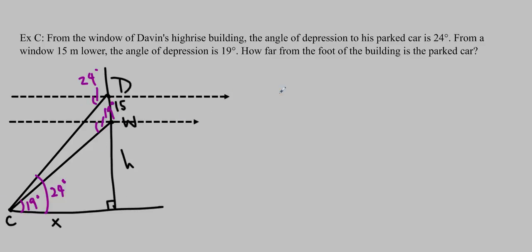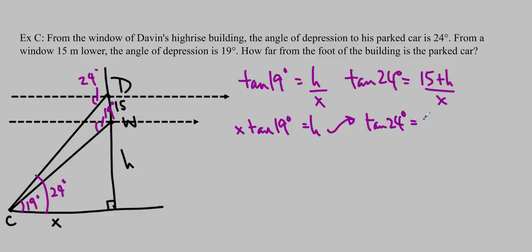So for our first one, you can see that tan 19 degrees is equal to opposite, which is H over adjacent X. And for our second one, tan 24 degrees is equal to 15 plus H over X. So we're just going to use substitution here. I'm going to isolate H so I can find X. So I'll get X tan 19 degrees is equal to H. I'm going to substitute that into here. So tan 24 degrees is equal to 15 plus X tan 19 degrees over X.